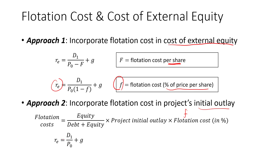For the cost of equity under approach 2, we use the same formula as the cost of internally generated equity, leaving out the flotation cost. So we just take D1 over P0, the expected dividend yield, plus the expected growth rate. Approach 2 is the recommended approach, but most of the time approach 1 is more common.